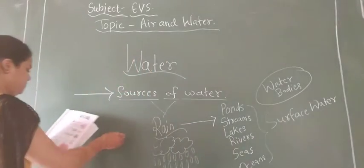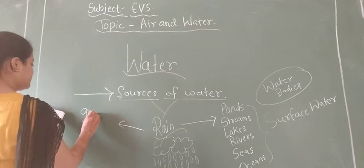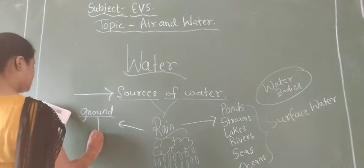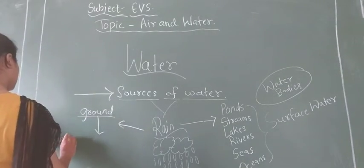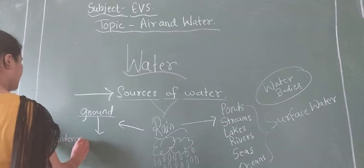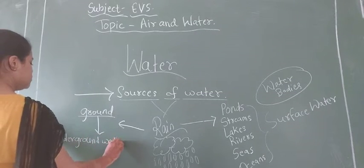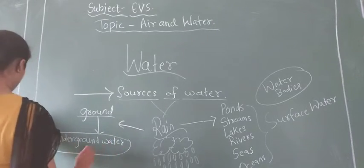Some rain water seeps into ground. This is called underground water - the water that goes under the ground.